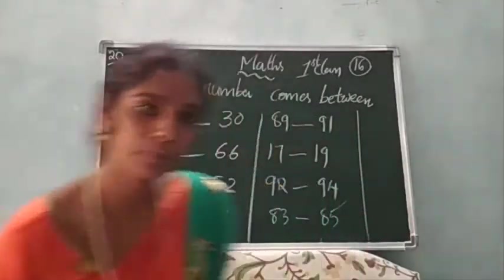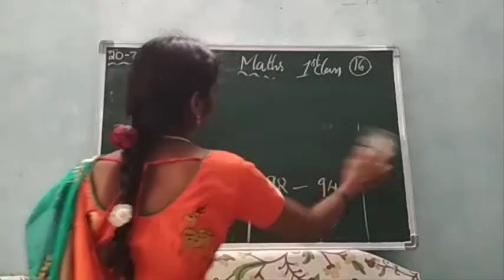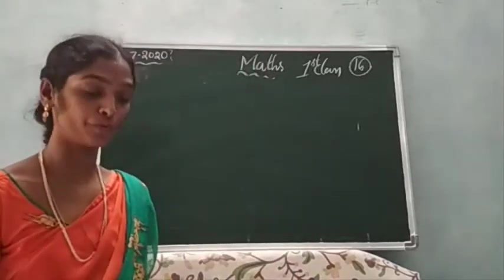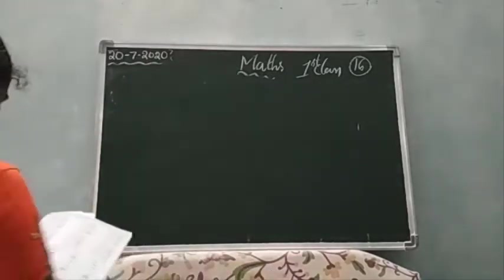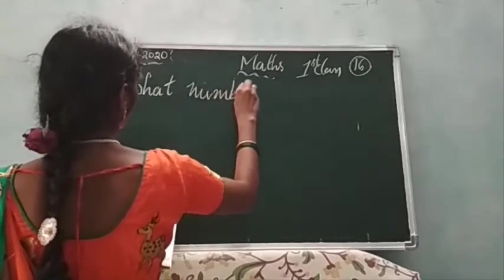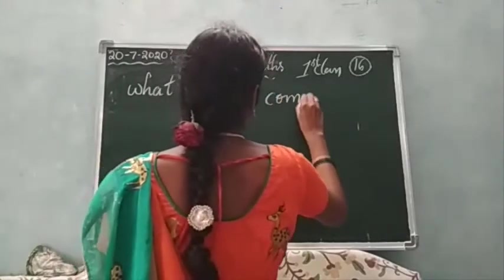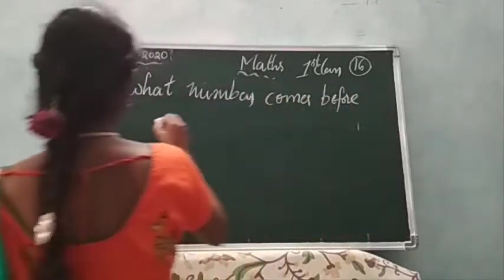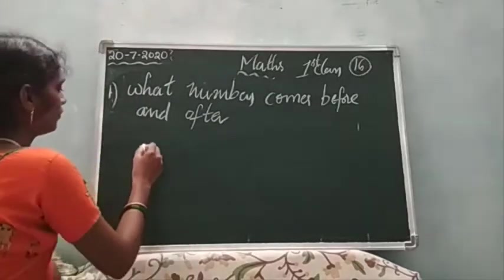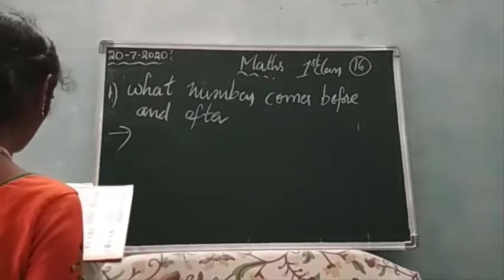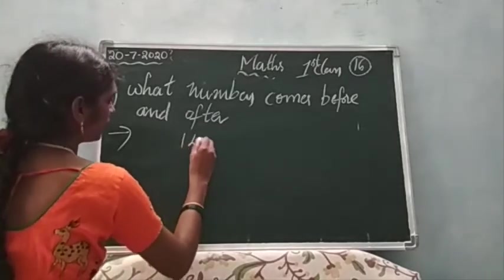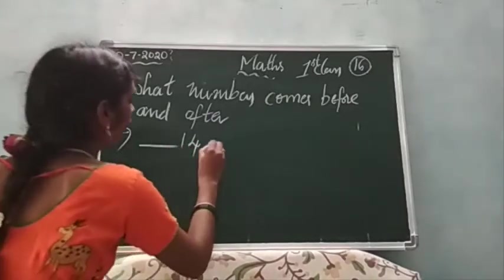Okay students. Shall I wrap the board? After this we will discuss about what numbers come before and after — what numbers come before and after. I will give you one example, then you will write comes before and after.